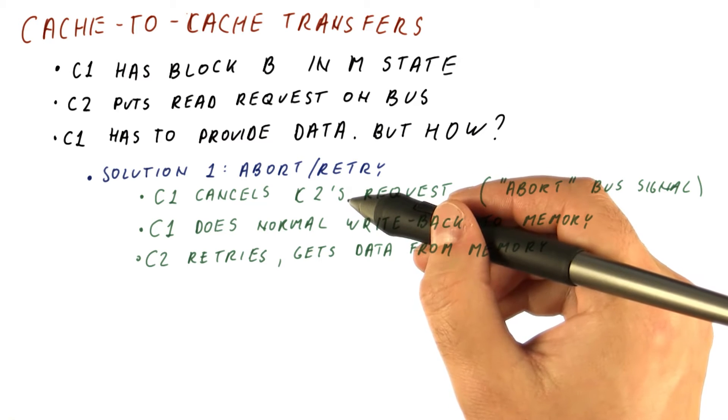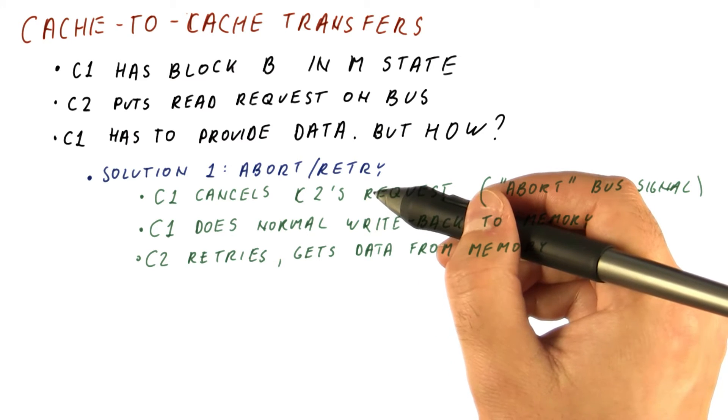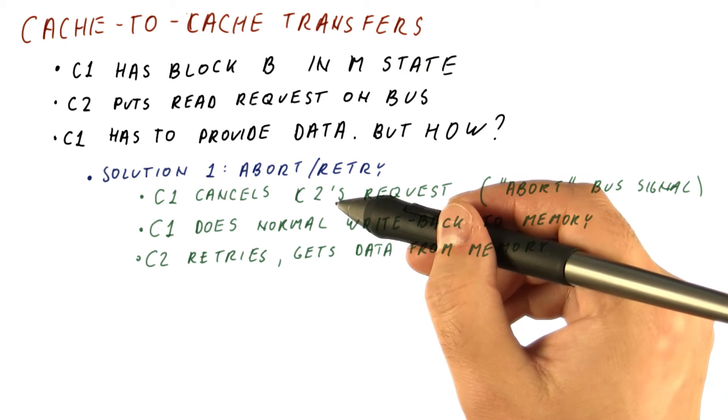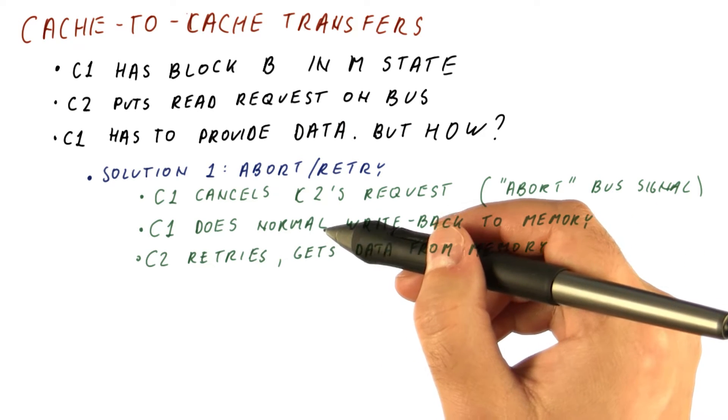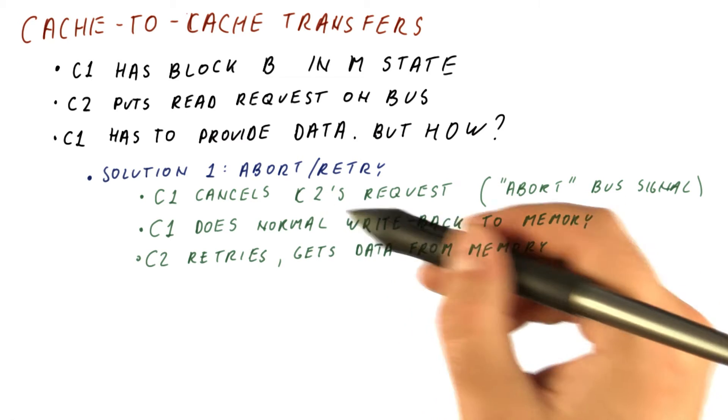The problem with this approach is that from the time C2 makes the request, if this data was normally coming from memory, we will have a memory latency. So if this is just a read miss, we will have a memory latency. But if it is a read miss where another core has the data, we really have to have two memory latencies before C2 can get the data.